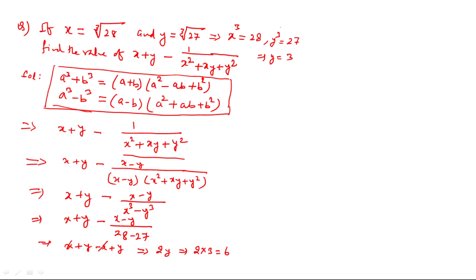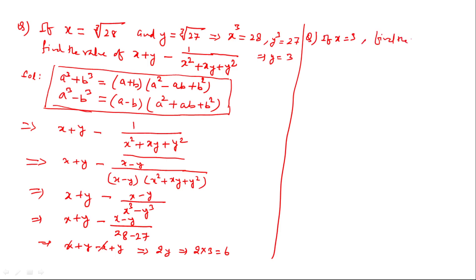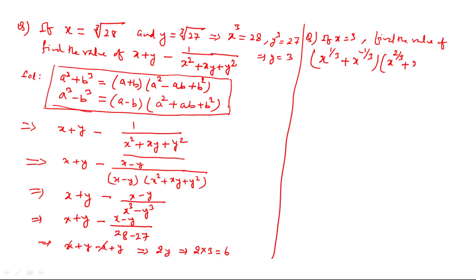Let us solve one more example. We are given: if x equals 3, find the value of x to the power 1/3 plus x to the power minus 1/3, in bracket, multiplied by x to the power 2/3 plus x to the power minus 2/3, minus 1.